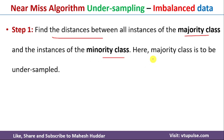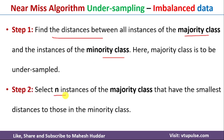For example, if we have 10 instances in the majority class and 5 in the minority class, we find the distance from all majority class instances with respect to all minority class instances. Next, we select n instances — for example, if I want to eliminate 5 examples, n will be 5. We select n instances from the majority class that have the smallest distances to the minority class and then delete those examples. This is how we achieve balanced class distribution.